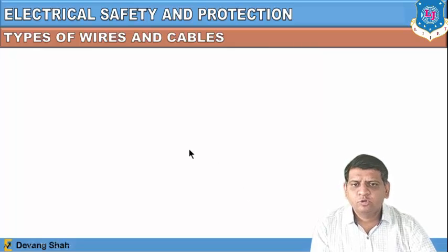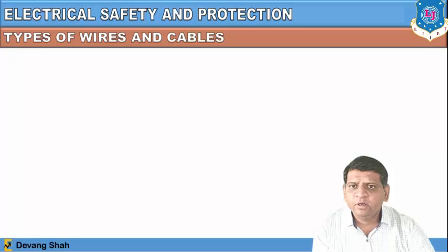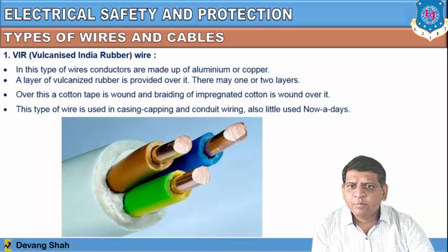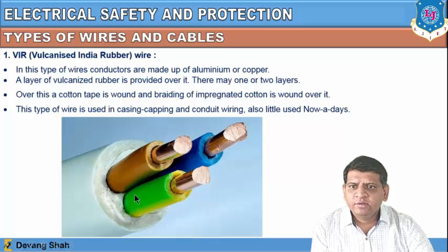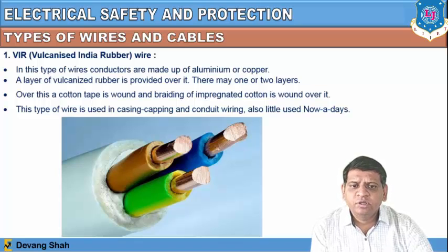Now let us discuss types of wires. The first type is the vulcanized Indian rubber (VIR) wire, where conductors are made of aluminum or copper, a layer of vulcanized rubber is provided, and there may be one or two layers over which a cotton tape and braiding of impregnated cotton is wound. This type is used in casing, capping, and conduit wiring, but is little used nowadays.